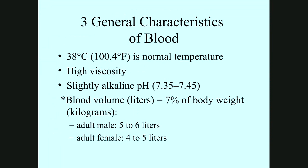The temperature of the blood is, of course, body temperature — about 38 degrees Celsius. It has high viscosity. The pH is between 7.35 and 7.45, which is slightly alkaline or basic. It represents between seven to eight percent of body weight in kilograms.